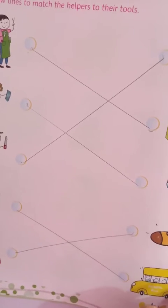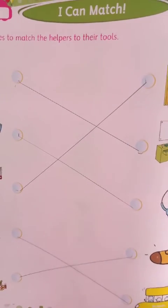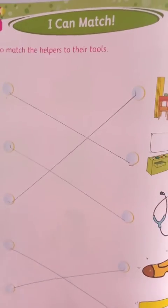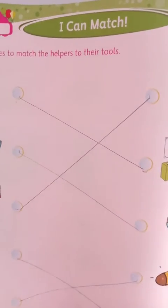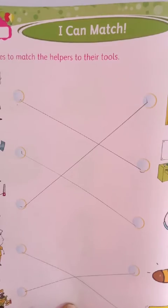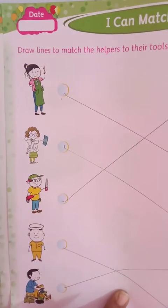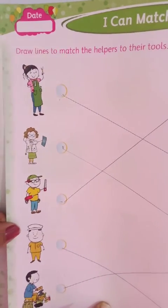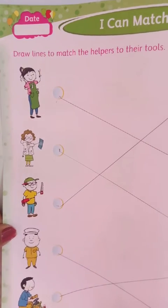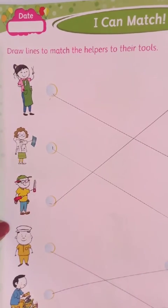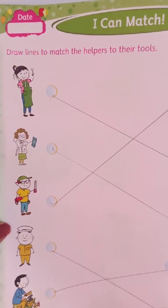So read and learn properly about our helpers. Okay. Next lecture mein hum log aapko natural world ke baare mein sikhaenge. Tab tak aapko yeh words finish karne hain aur aapko helpers ke names yaad karne hain. Okay beta. Now hum log apna lecture over karte hain yahan pe. Take care, goodbye.